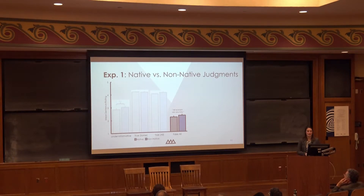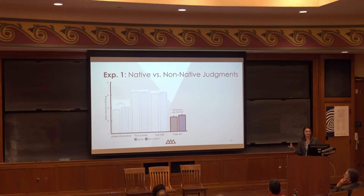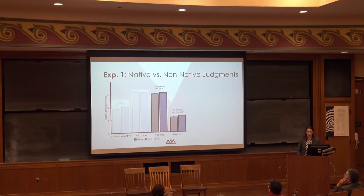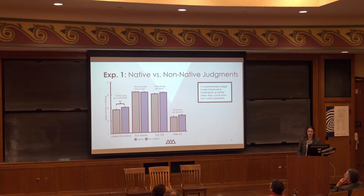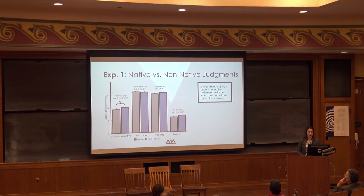We don't expect the control sentences to differ across speaker conditions. Looking at the overall sentence ratings: for false sentences like 'all women are doctors,' people didn't like these; they thought true sentences were pretty good—just what we'd expect. For our critical under-informative case like 'some dogs are mammals,' people think these are better when they come from a non-native speaker, which is in line with our predictions. This also shows us that these stable speaker knowledge properties affect pragmatic judgments.